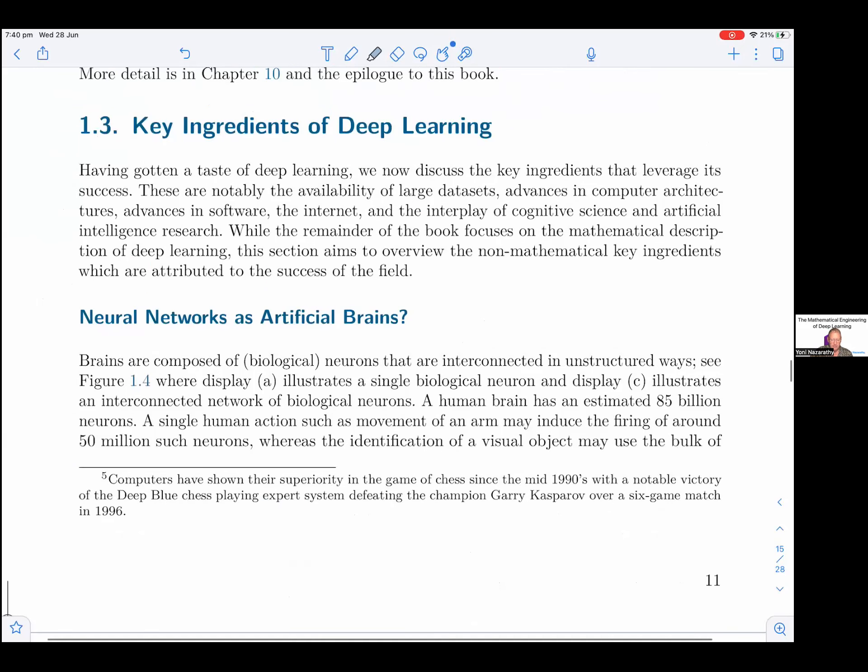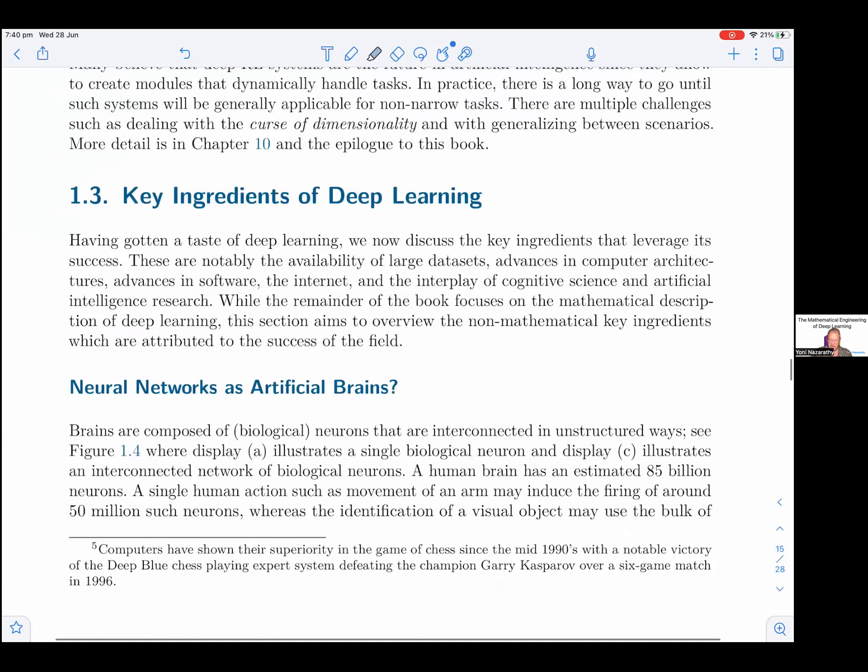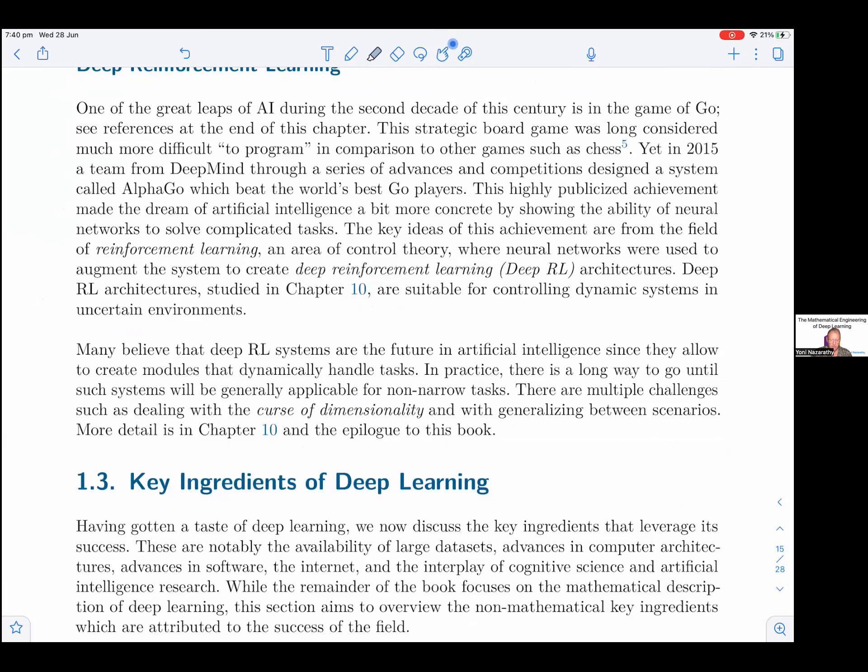Yet in 2015, a team from DeepMind, through a series of advances and competitions, designed a system called AlphaGo which beat the world's best Go players. This highly publicized achievement made the dream of artificial intelligence a bit more concrete by showing the ability of neural networks to solve complicated tasks. The key ideas of this achievement are from the field of reinforcement learning, an area of control theory, where neural networks were used to augment the system to create deep reinforcement learning, deep RL architectures.